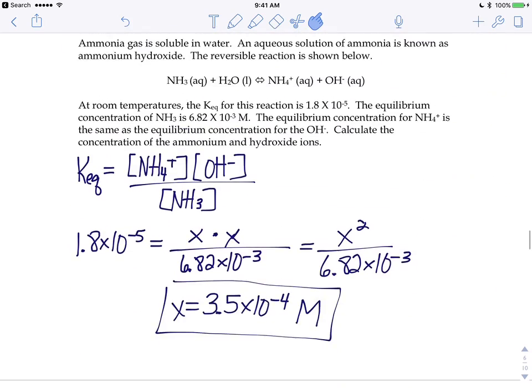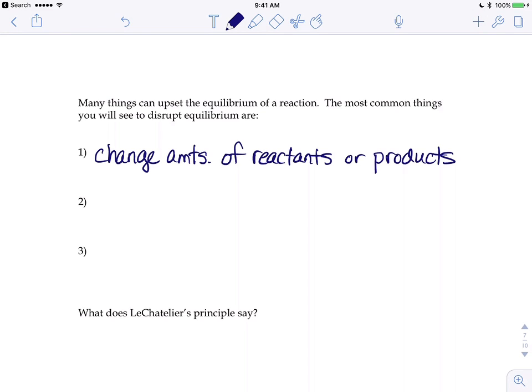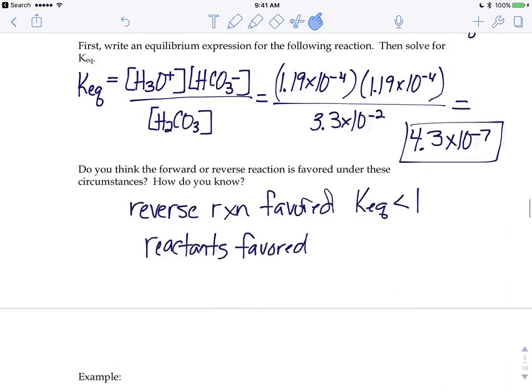There are three common ways to adjust equilibrium. The first way is to change the amounts of reactants or products. This puts a different amount of chemical into the reaction.